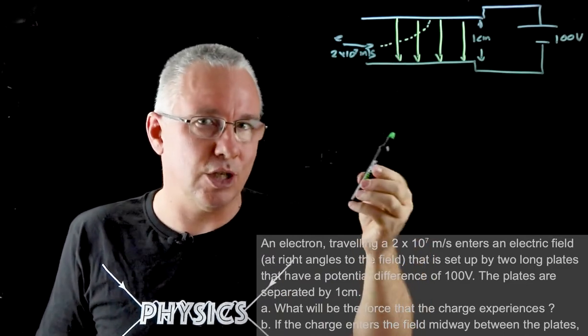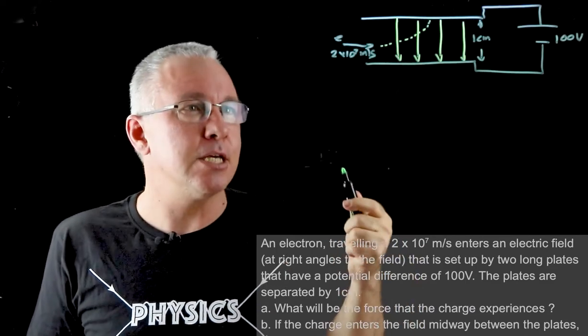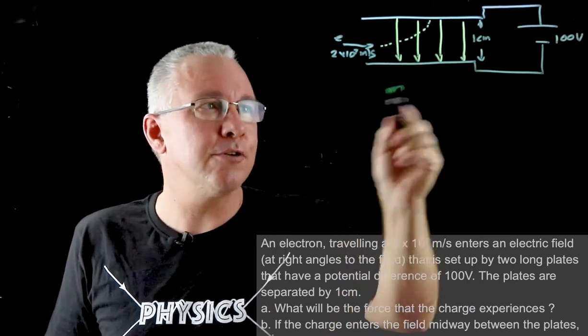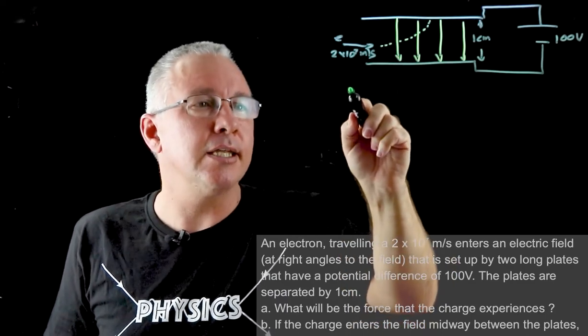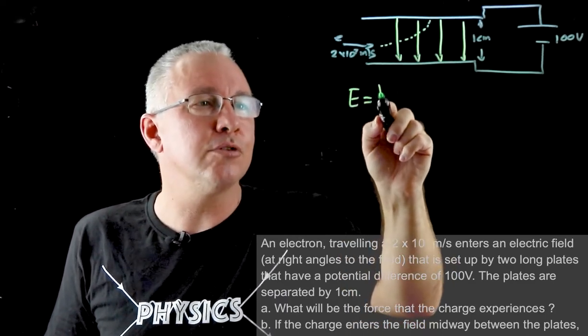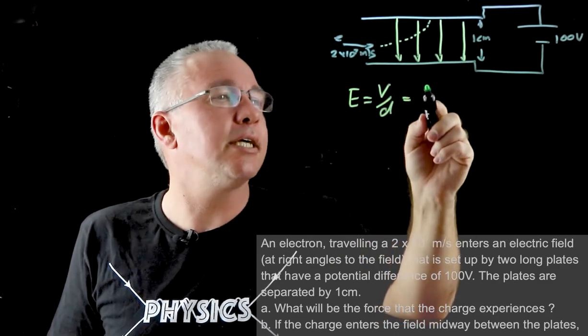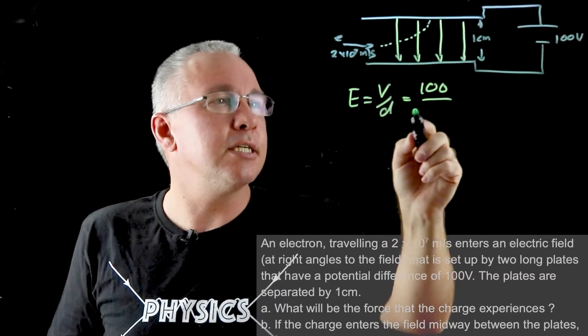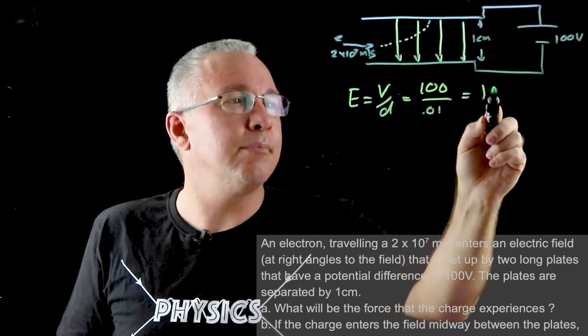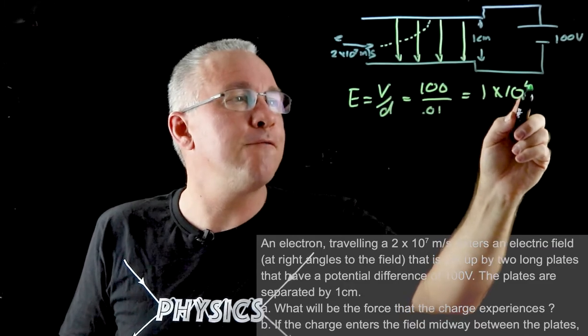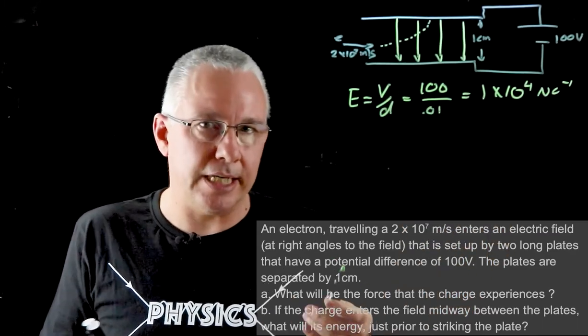Of course the acceleration is not going to be 9.8, it's going to be due to the force that this charge is experiencing. So let's set this out. We know first of all that it is an electric field and we need to know what the electric field strength is. The electric field strength is equal to the voltage divided by the distance of separation of the plates. So this is equal to 100 divided by 0.01, so we're getting an electric field strength of 1 by 10 to the power of 4 newtons per coulomb or volts per meter. The units are equivalent.